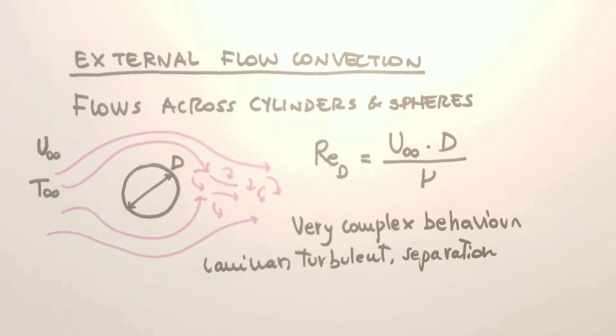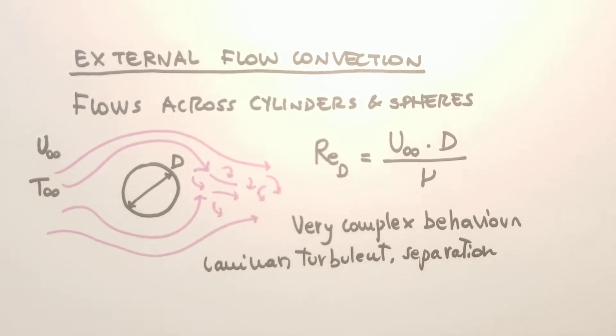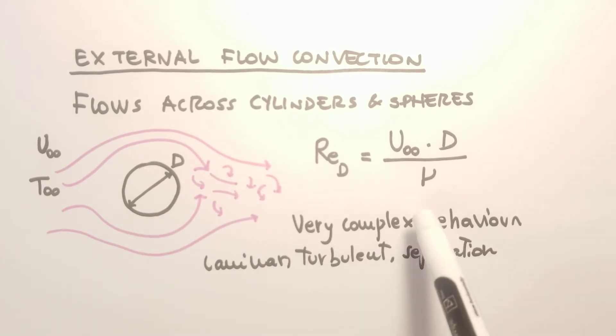The Reynolds number is defined using the freestream velocity u infinity, the diameter of the sphere and the cylinder, and of course kinematic viscosity. These flows are very complicated because they involve laminar flow, turbulent flows, and separation.